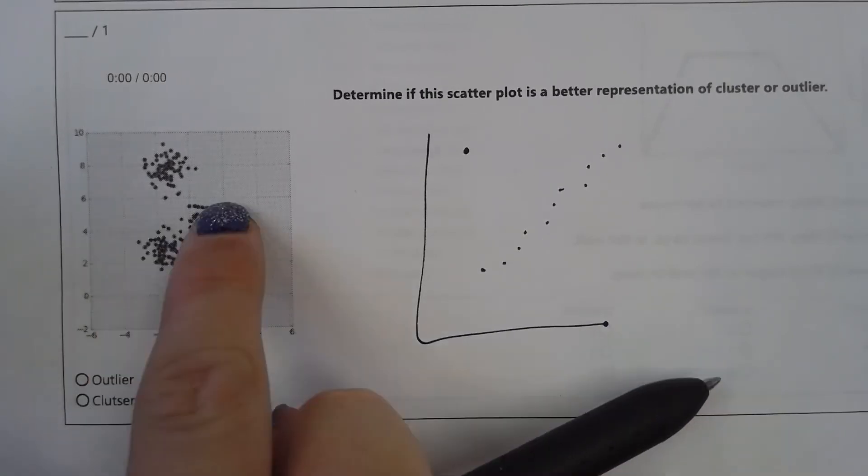Next equation has variables on both sides, so we need all variables on one side and all constants on the other. Subtract 6m from both sides: 9m minus 6m gives 3m, and we still have plus 33 on the left and negative 21 on the right. Subtract 33 from both sides: 3m = negative 21 minus 33, which gives 3m = negative 54. Divide both sides by 3: m = negative 18.